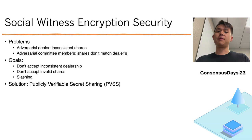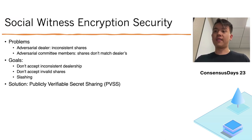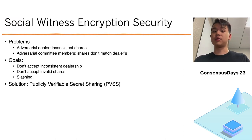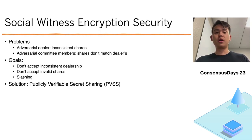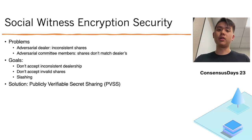There are some problems with this initial scheme. The dealer can be adversarial and generate inconsistent shares. Additionally, the committee members themselves can be adversarial — they may publish shares at the end that don't match what the dealer gave them at the beginning. Our goals are to reject inconsistent dealership and reject invalid shares given by participants. Mainly, we want to do this so we can slash — specifically, we want to punish committee members who don't reveal shares at the end. But we don't want to punish them wrongly: if the dealer dealt inconsistent shares in the beginning, we don't want to punish the committee members — we just want to reject that inconsistent dealership upfront.